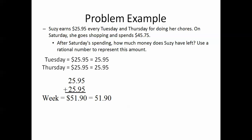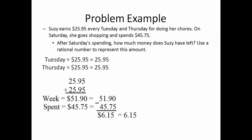So, next question. After Saturday's spending, how much money does Suzy have left? Use a rational number to represent this amount. So, she's spent $45.75. Again, write this as a rational number. That means to get rid of the dollar sign, which is $45.75. Subtract the two, we get $6.15.